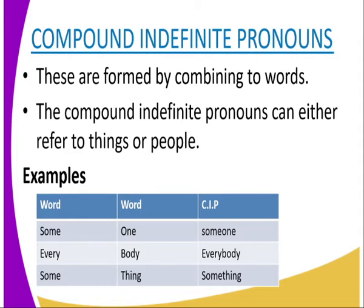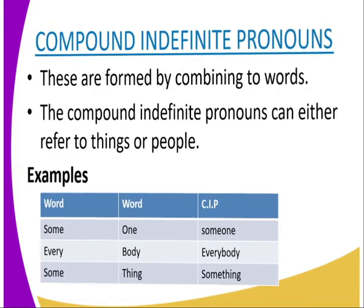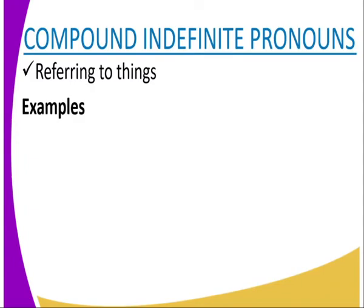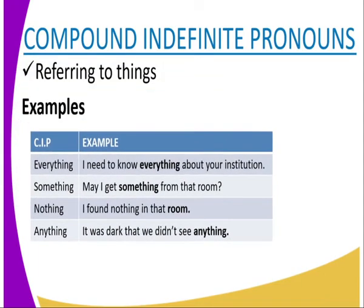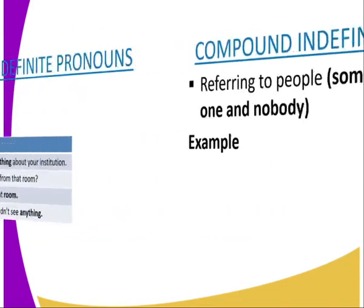So compound indefinite pronouns can refer to things or people. 'Something' refers to a thing; 'everybody' and 'someone' refer to people. Those that refer to things include: everything — 'I need to know everything about your institution'; something — 'May I get something from that room?'; nothing and anything — for example, 'I found nothing in that room' or 'You didn't see anything.'